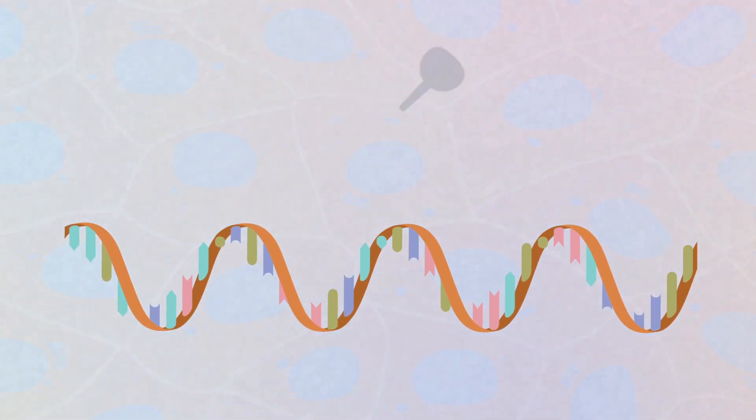If the mRNA sequence can be delivered to enough cells, they will create the viral proteins right within the cell, giving your immune system the means to recognize and fight any virus with these characteristics.